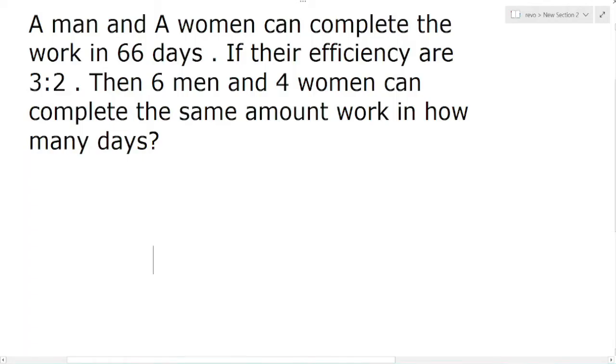A man and a woman can complete the work in 66 days. If their efficiency are in the ratio three to two, then six men and four women can complete the same amount of work in how many days? Initially it is given that a man and one woman can complete the work in 66 days.